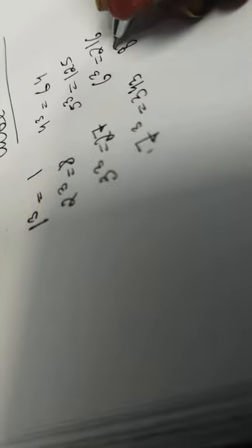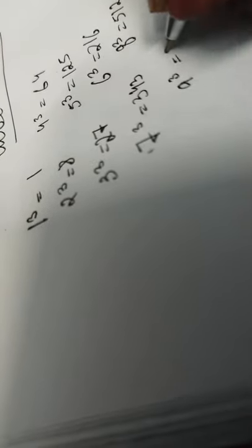1 cube is 1, 2 cube is 8, 3 cube is 27, 4 cube is 64, 5 cube is 125, 6 cube is 216, 7 cube is 343, 8 cube is 512, and 9 cube is 729.